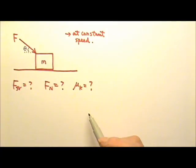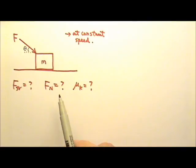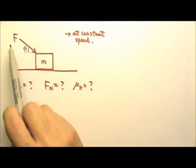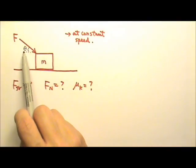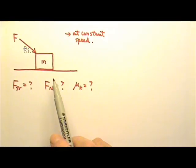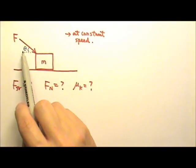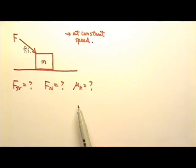In this problem, we don't have numbers to work with. So we will keep G as G, and our answers will be in terms of G and what's given. What's given will be F, theta, and M. So our answers can be in terms of F, theta, M, and G.